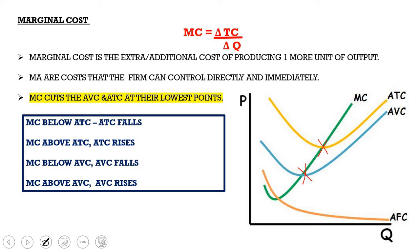When MC is below ATC, ATC will fall. When MC is above ATC, ATC rises. Similarly, when MC is below AVC, AVC falls, and when MC is above AVC, AVC rises.